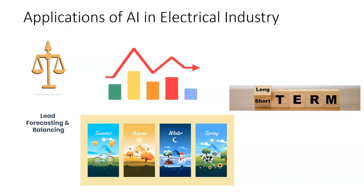If load forecasting and balancing is not taken care of, it will lead to outages, which obviously results in dissatisfaction and loss of revenue. Today, power system companies are buying power from multiple sources, so this load balancing and forecasting becomes very, very essential. Previously, Excel used to be the go-to tool to understand the future demand so that the load can be forecasted and the consequent balancing efforts taken.